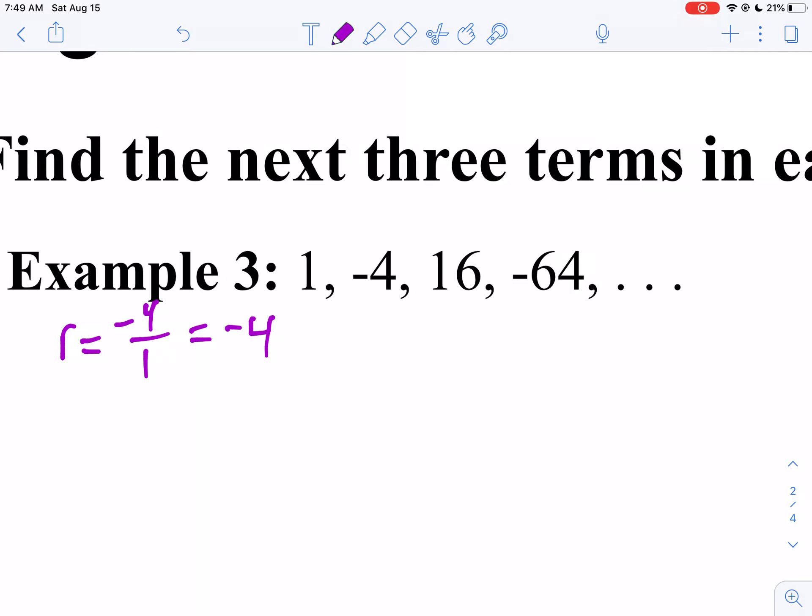So to find my next three terms, I'm going to take negative 64 times negative four. A negative times a negative is a positive.